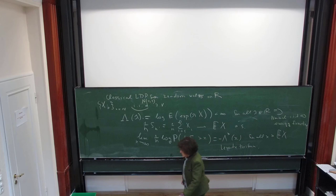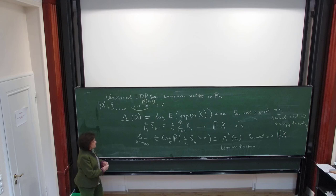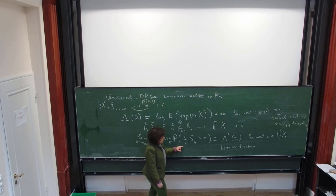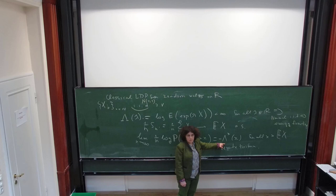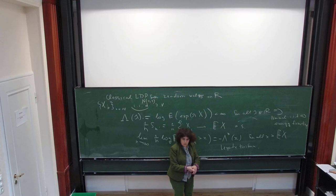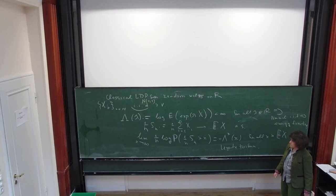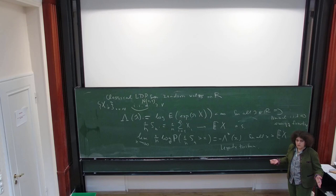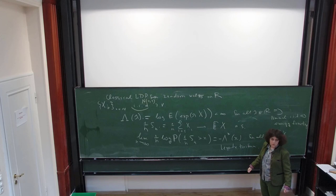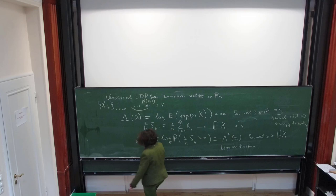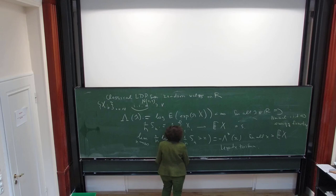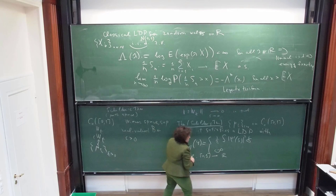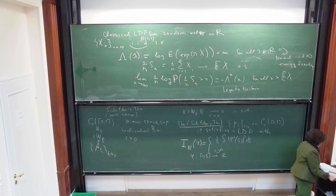Why are Carnot groups interesting? Essentially they describe lots of situations where you have some kind of control system. We allow movement only in two directions, X and Y. But because of the bracket condition — called Hörmander's condition — you can actually reach any point in the group. So you only allow two-dimensional movement, but eventually you get everywhere. The norm we use is not smooth. These are sub-Riemannian manifolds because you only put an inner product on the first layer and then propagate it everywhere.